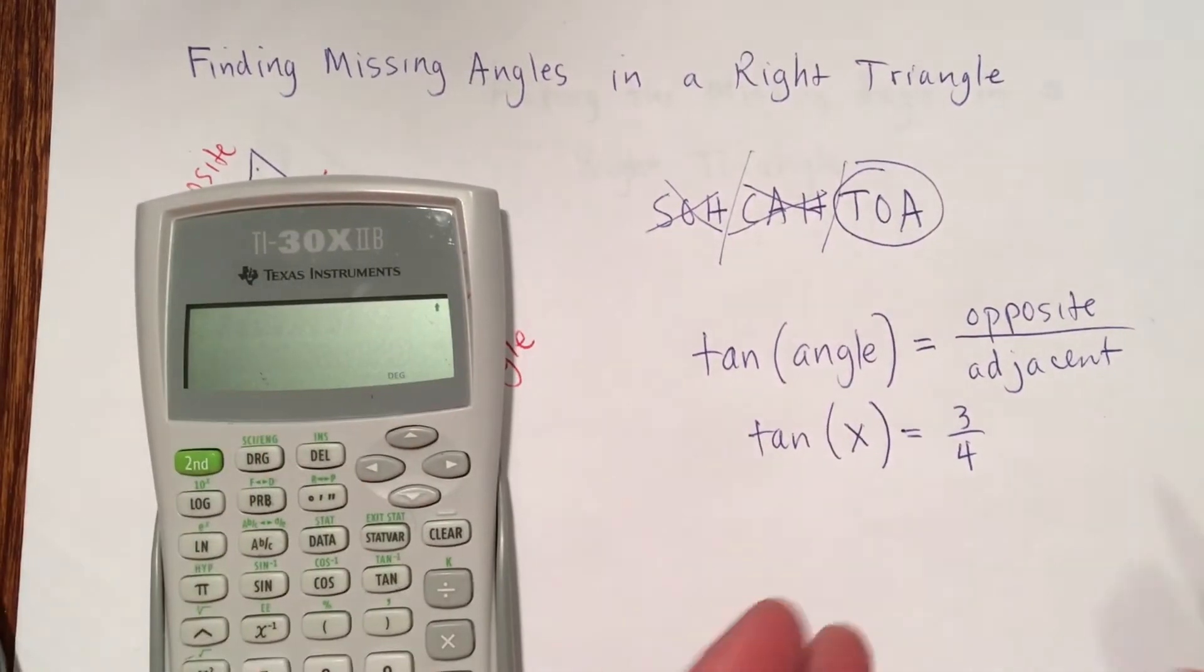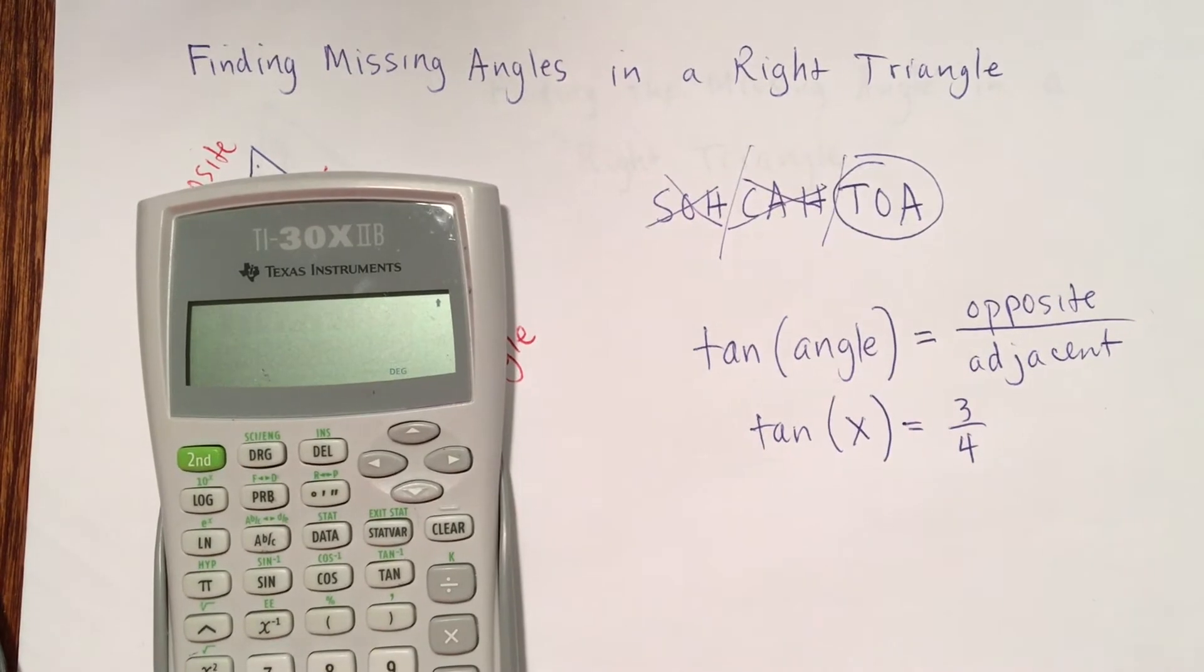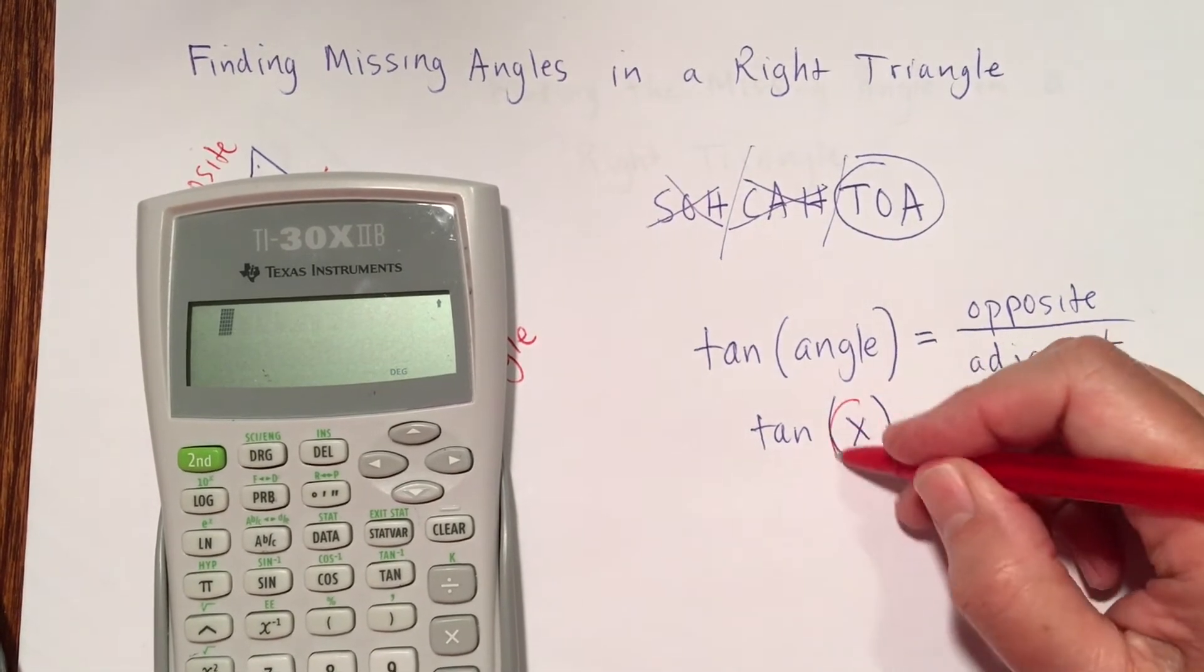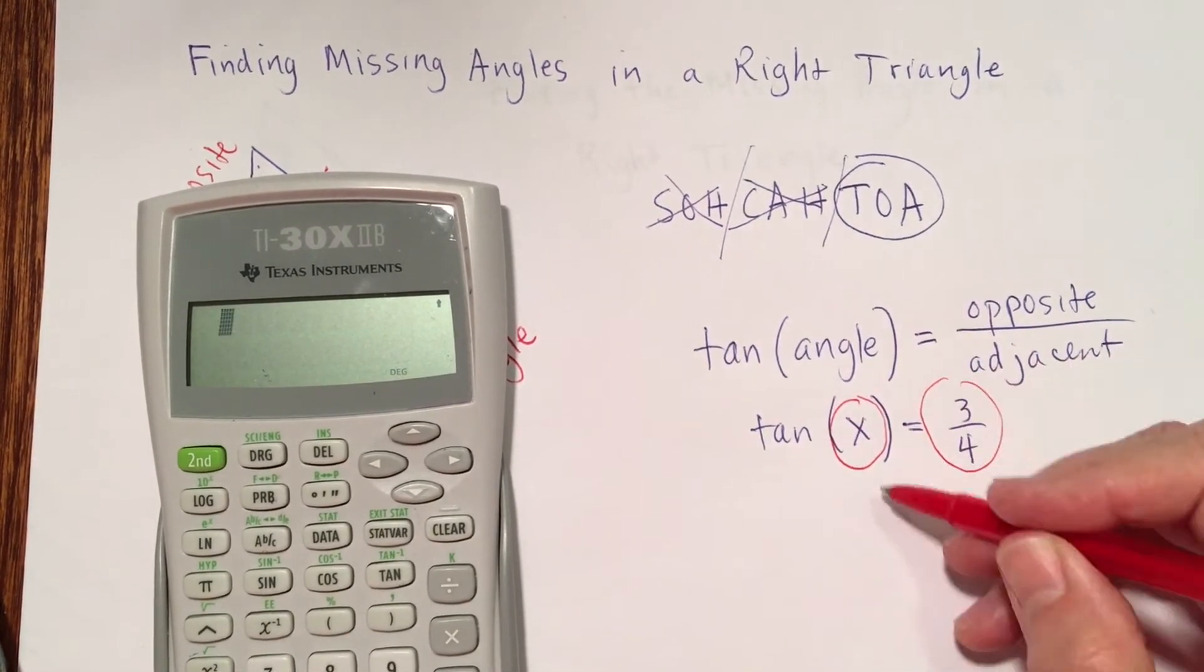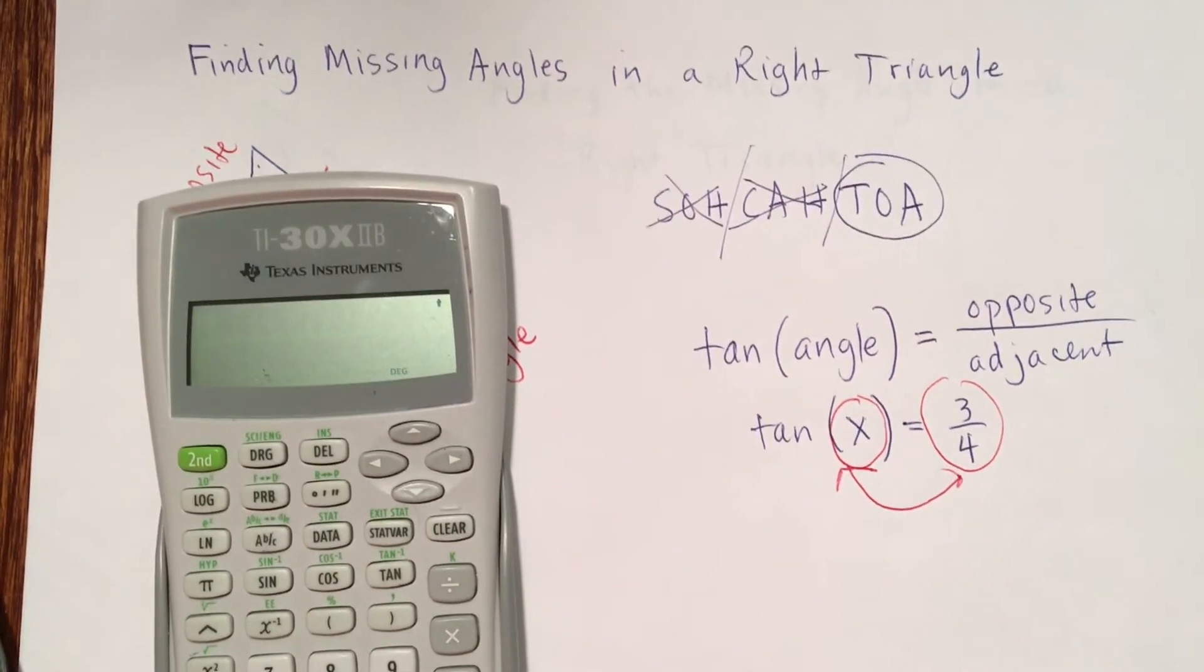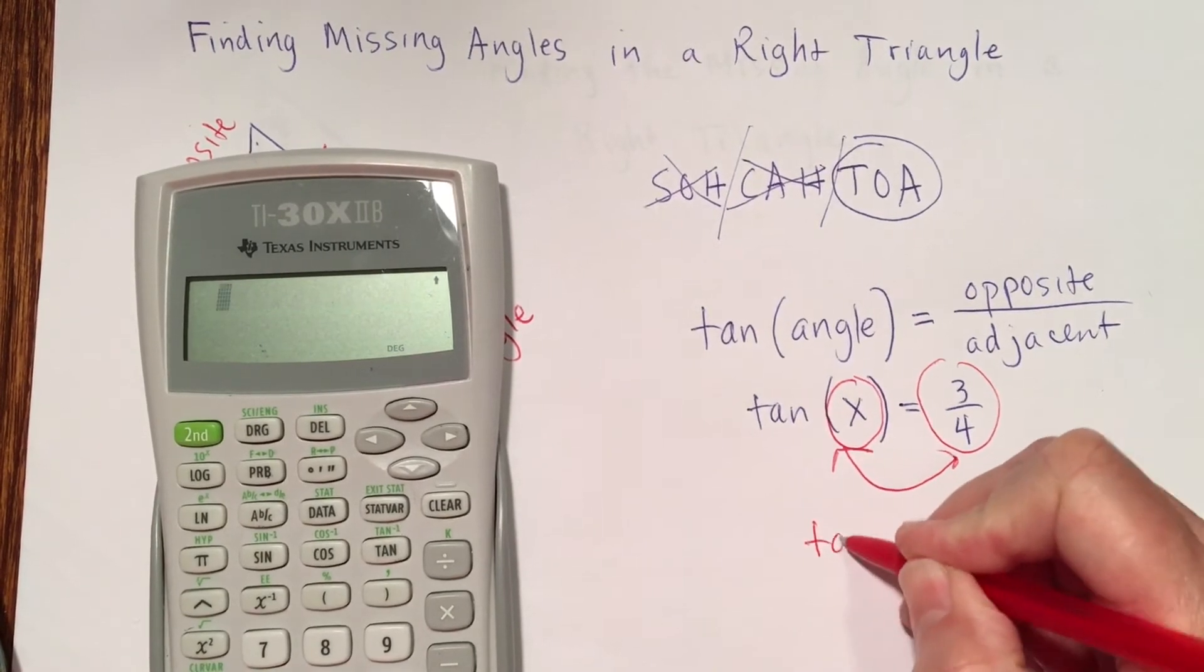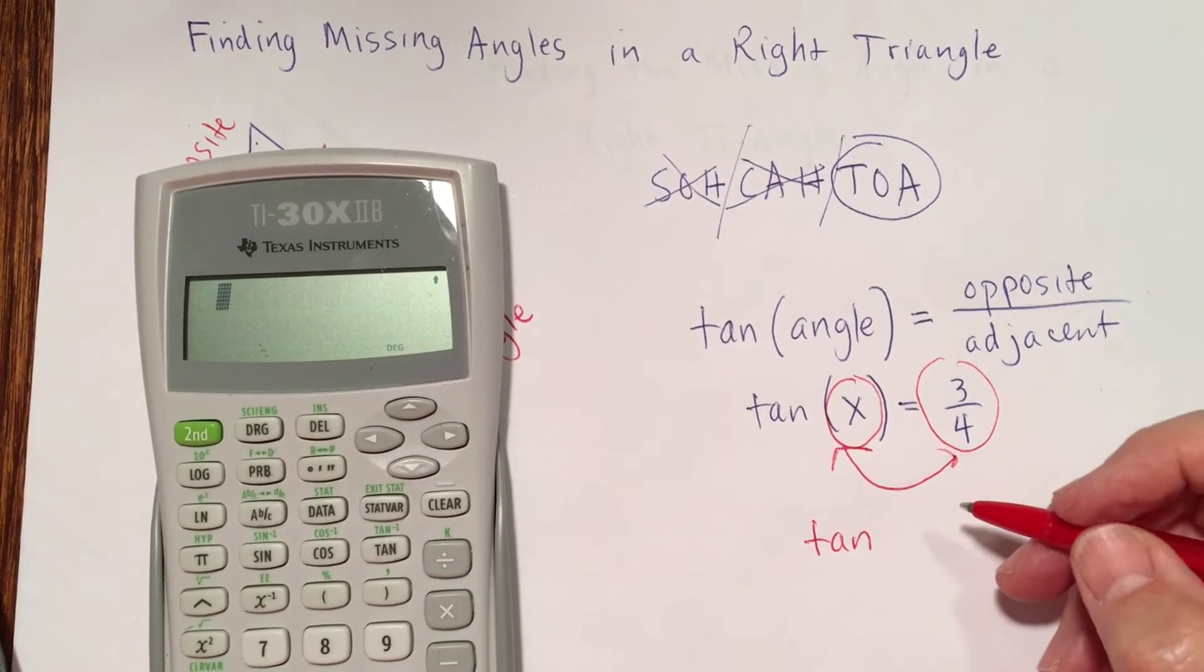Now, the way I would write this problem, before I type it in my calculator, is this. The x and the 3 fourths are going to trade places. And when I trade places with them, it's not tangent anymore. It's tangent with a little minus 1 at the top.